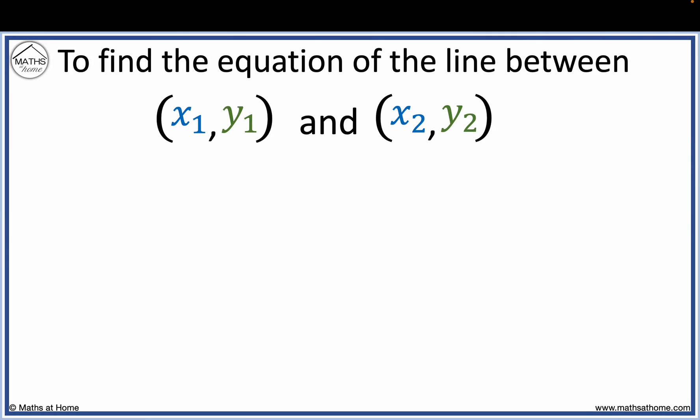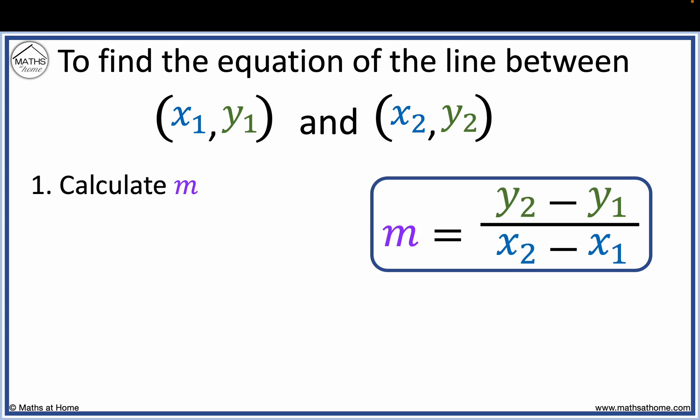To find the equation of a line between two points x1, y1 and x2, y2, we first calculate the gradient m. To do this, we use the formula m equals y2 minus y1 over x2 minus x1.